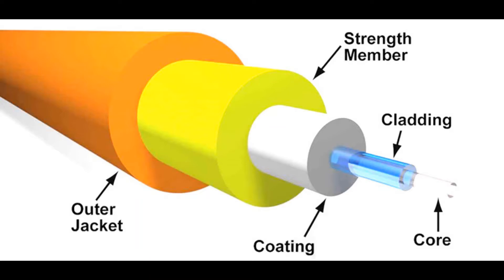These fibers use a concept called total internal reflection to keep all of the transmitted light inside the fiber and they need a few layers for it to work successfully.